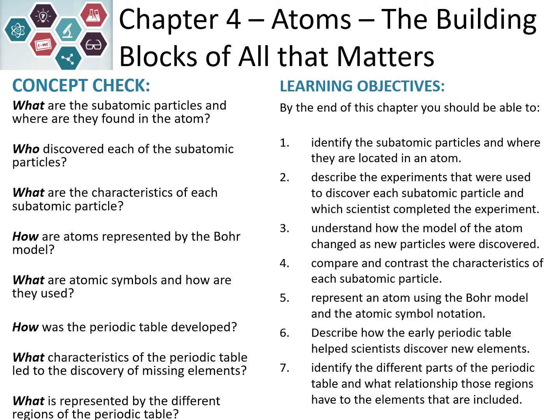Chapter four, we're going to be looking at the building blocks of matter, which is atoms. Atoms are actually built up of subatomic particles, and we're going to look at where they're found, the discovery of those subatomic particles, and the characteristics of them. We'll also be talking about Bohr's model of the atom and where we find electrons inside the atom, atomic symbols and how we use those, and we're going to look at the periodic table in more depth — its history, how it was developed, how it was used to predict missing elements, and what the different regions in the periodic table mean.